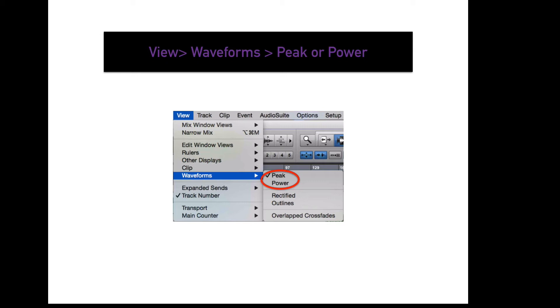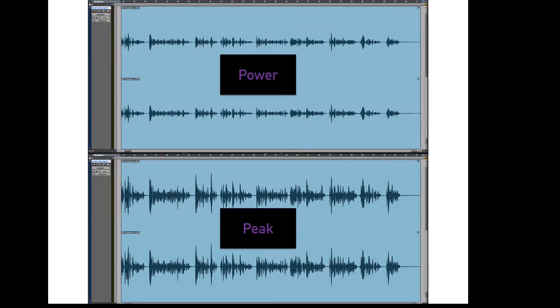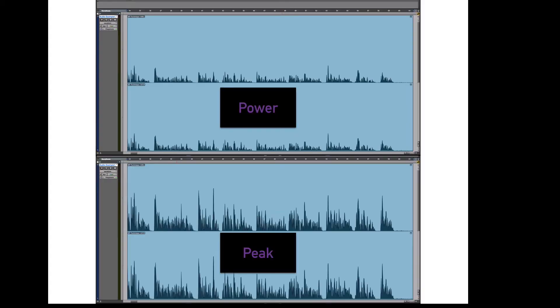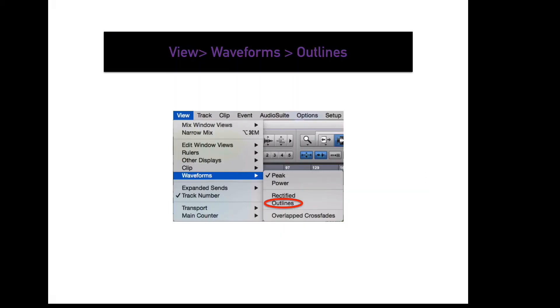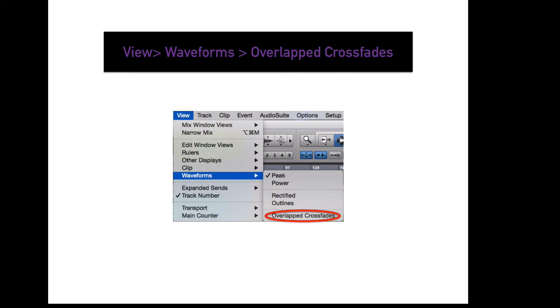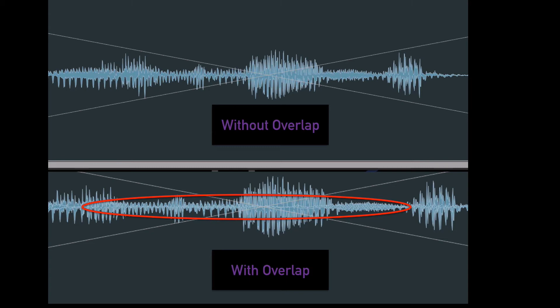To change between Peak and Power waveform display, go to View, Waveforms, Peak or View, Waveforms, Power. Peak displays all of the transients of the signal, while Power displays the RMS level, which relates more to average amplitude. To change your waveform view to Rectified, go to View, Waveforms, Rectified. A rectified waveform is a summation of both negative and positive cycles, helpful for workflows requiring easy visual references such as adjusting volume automation. To outline your waveform, go to View, Waveforms, Outlines. To view overlapped crossfades, go to View, Waveform, Overlapped Crossfades — this shows a visual representation of how two clips fade into each other.